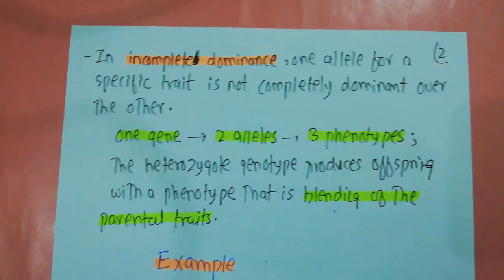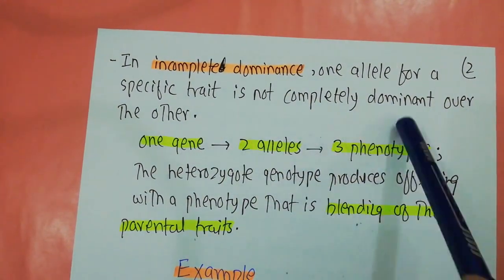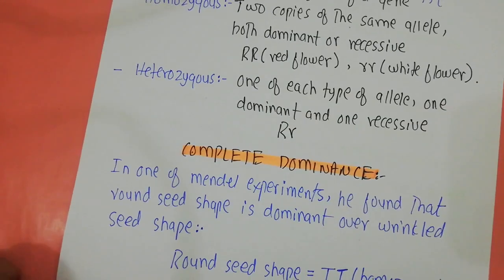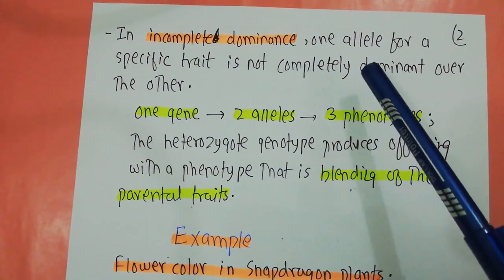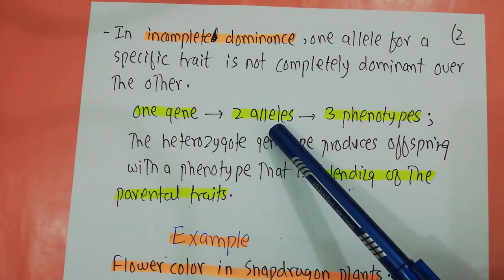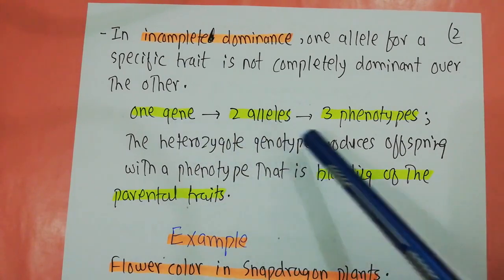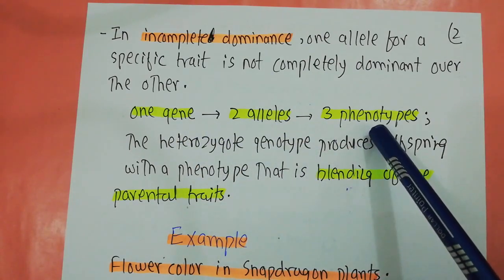In incomplete dominance, one allele for a specific trait is not completely dominant over the other. In the complete dominance example, the round seed shape allele — capital T — is completely dominant over the wrinkled seed shape allele — small t. But when one allele is not completely dominant over the other, that is incomplete dominance. In incomplete dominance, one gene has two alleles but there are three phenotypes, compared to complete dominance where one gene and two alleles produce only two phenotypes.